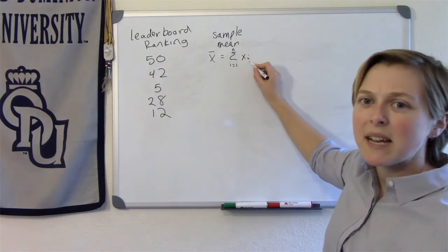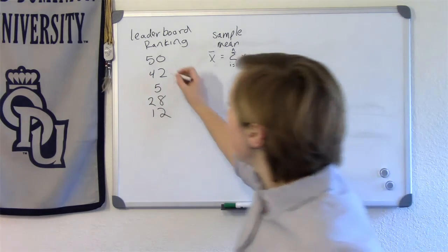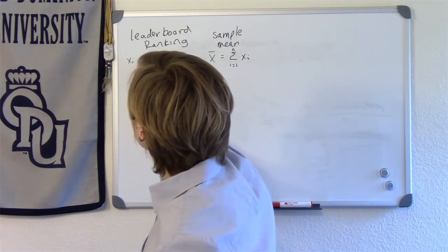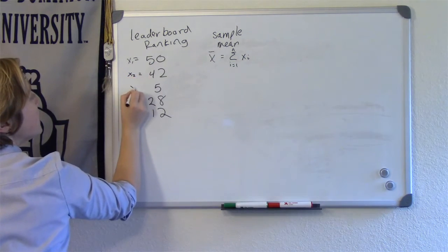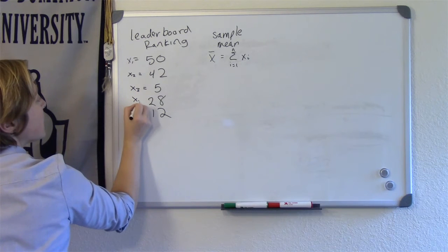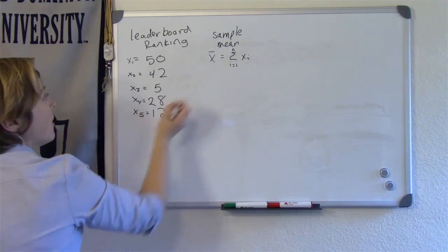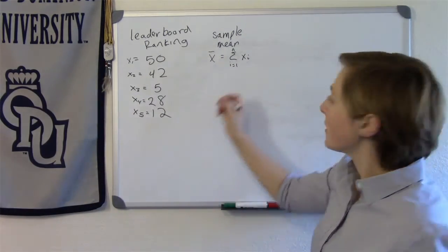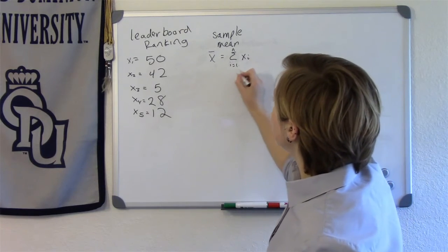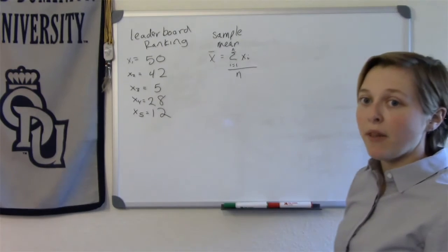So our notation for sample mean was x bar and it equals the sum from i equals 1 to n of xi divided by n. What's xi? Each of these data points are x1 through 5. So this xi is one of these, the i-th observation. So this sum divided by n, that's what sample mean is.